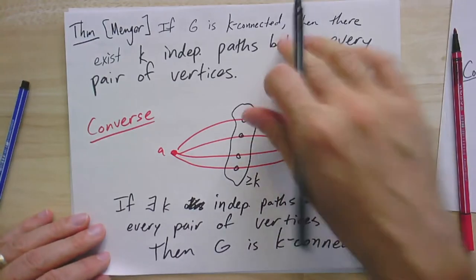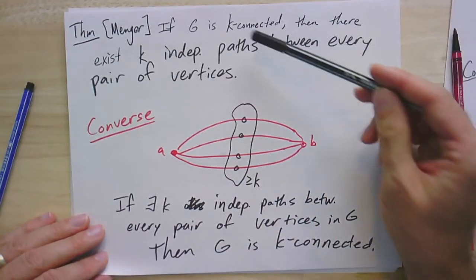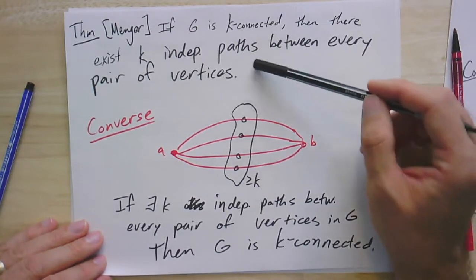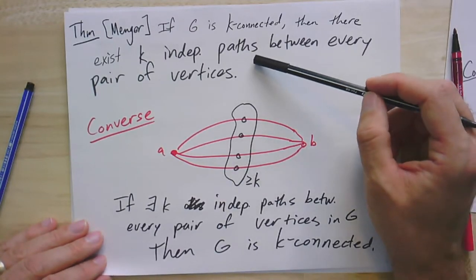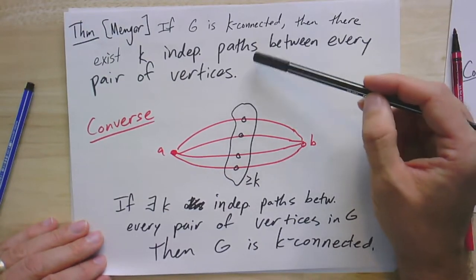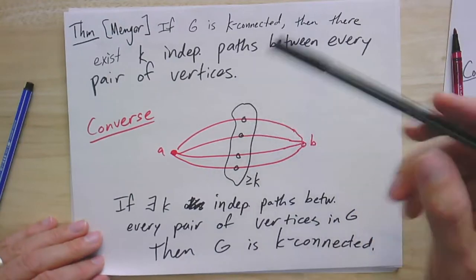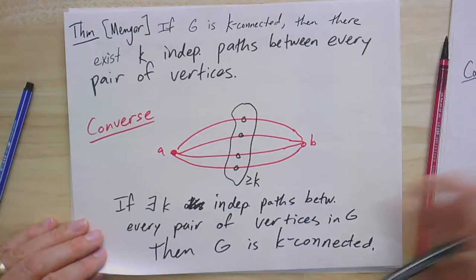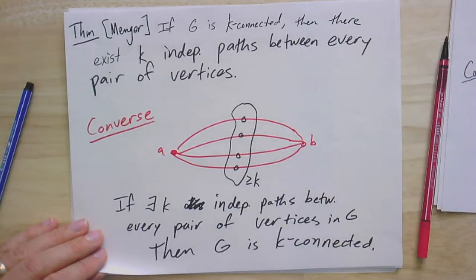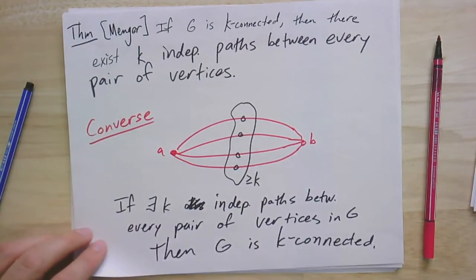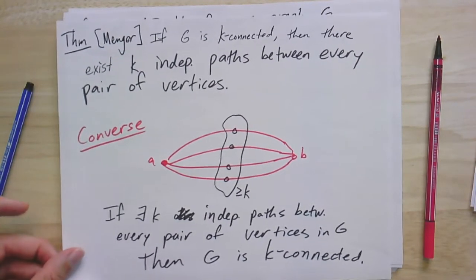This is the easy direction of the theorem. The hard part is showing that if we do have a k-connected graph, we can find those independent paths. Before I can get to the proof of the main theorem, we're going to prove an alternative version, which will give us this version of Menger's theorem pretty directly. It's not phrased in terms of independent paths, but disjoint paths. To get there, we first need to find something called a separator.